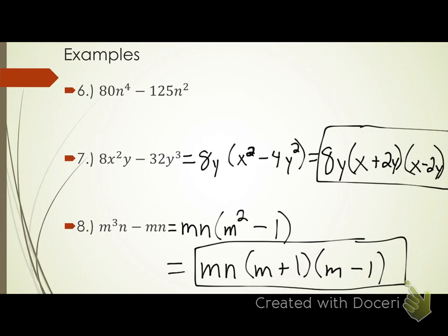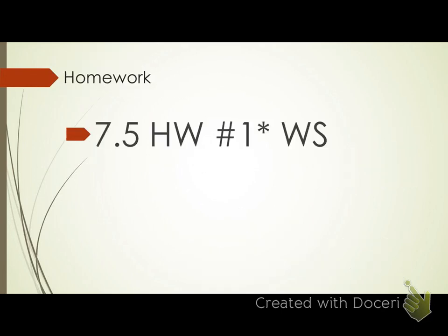Any questions how I got that for number eight? If you're ever unsure of your answer, what can you always do to check it? Foil it back out, multiply it back out. I would probably foil first and then distribute my mn into the new polynomial, and I should get back to my original polynomial. Make sure on your assignment that I see your work — showing your work means creating that factor chart. I want to see your chart on every single problem. Make sure on every single problem you're looking for a GCF first and foremost. We've got a worksheet today.